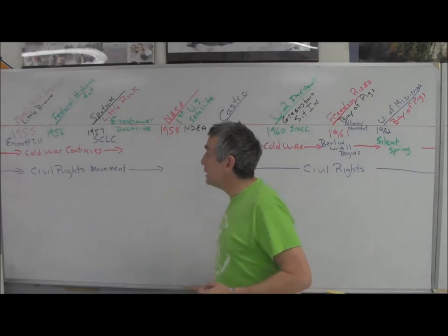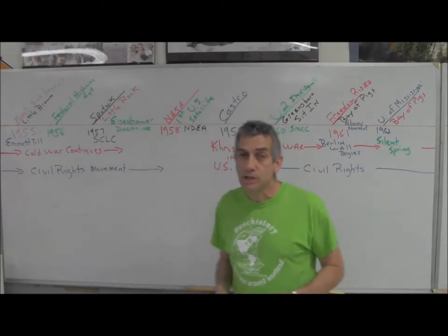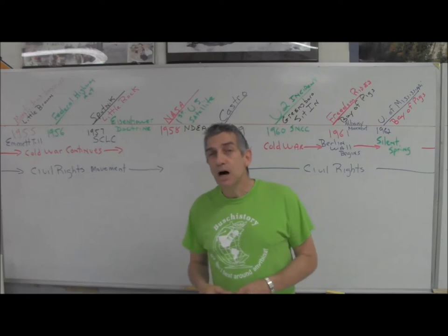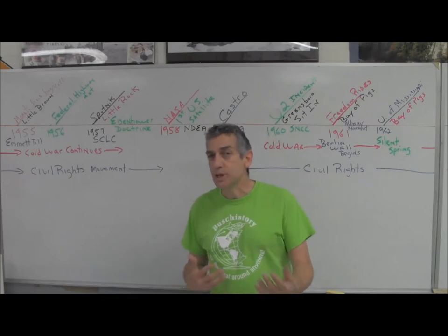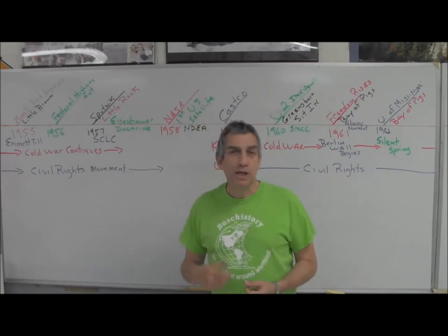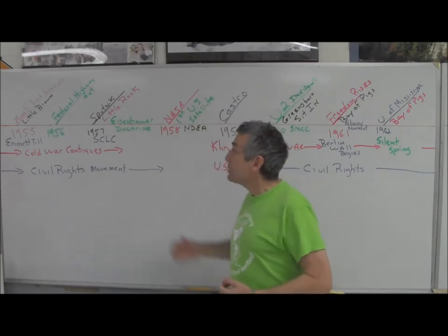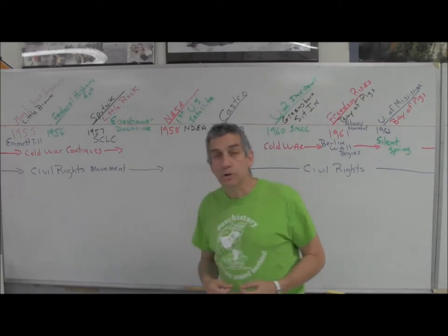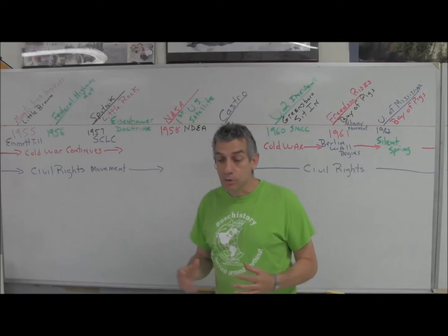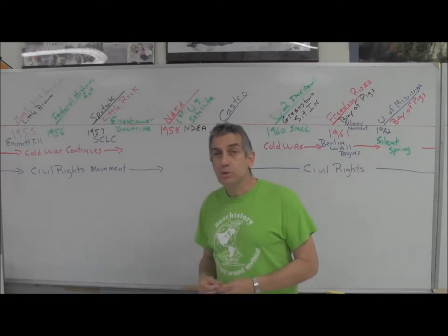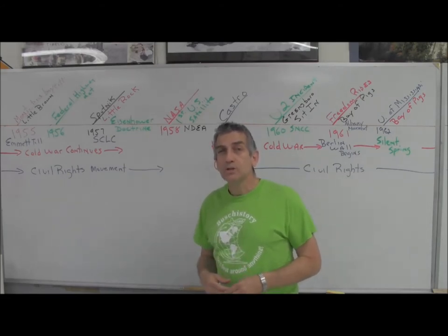The Little Rock Nine is going to be in 1957 - the altercation between Governor Faubus of Arkansas and President Eisenhower. It's another segregation issue and states' rights issue. The Southern Christian Leadership Conference is going to be born, headed by Dr. King.